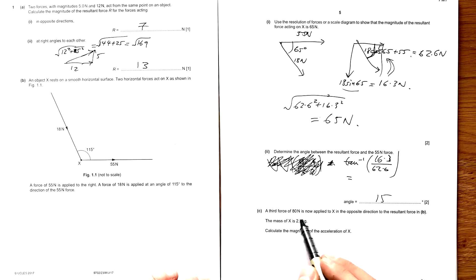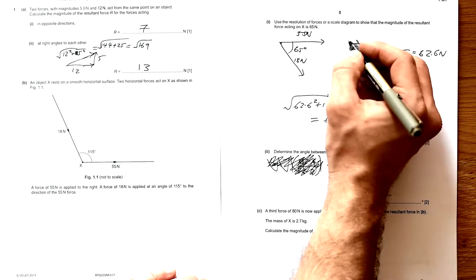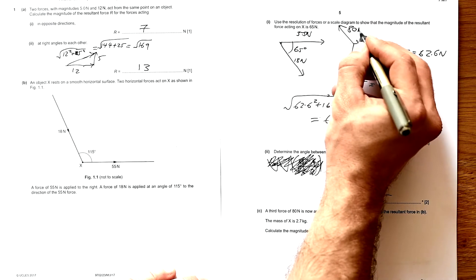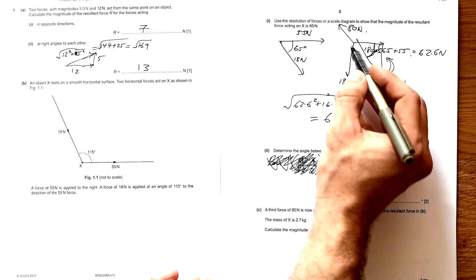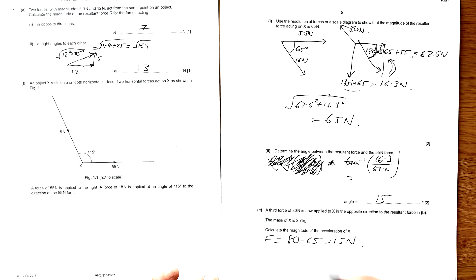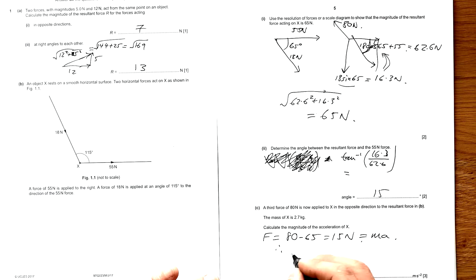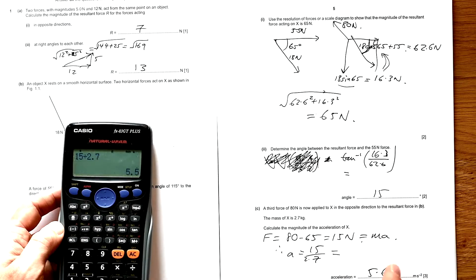A third force of 80 Newtons is now applied to X in the opposite direction to the resultant force. The mass of X is 2.7 kilograms. Calculate the magnitude of the acceleration of X. If we have 65 Newtons pulling one way and 80 Newtons the other, the overall force is 80 minus 65, which is 15 Newtons. F equals Ma, so acceleration is 15 divided by 2.7, giving us 5.6 metres per second squared.